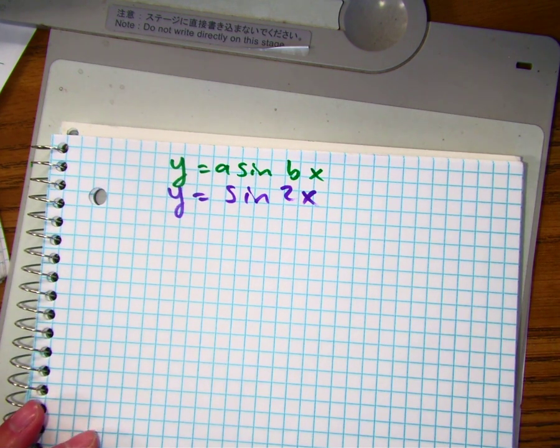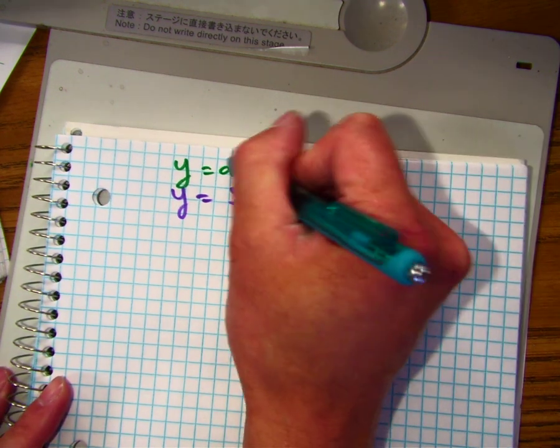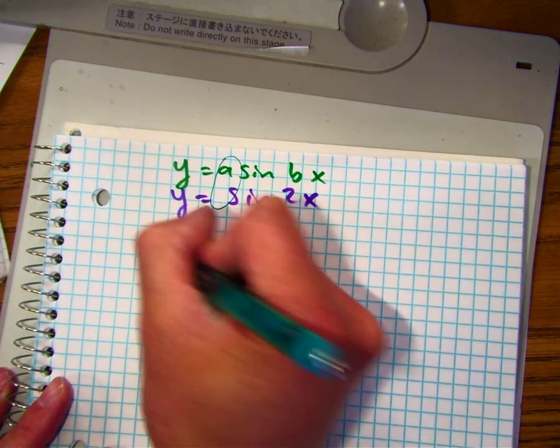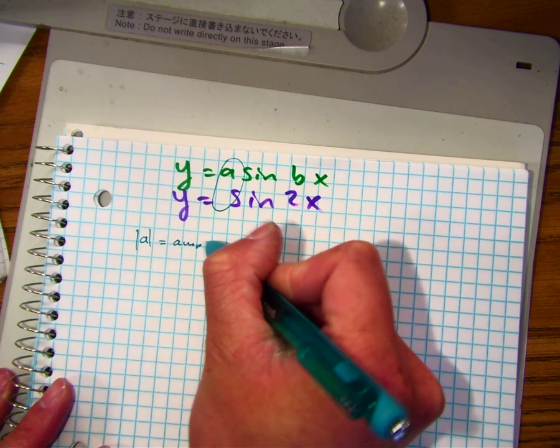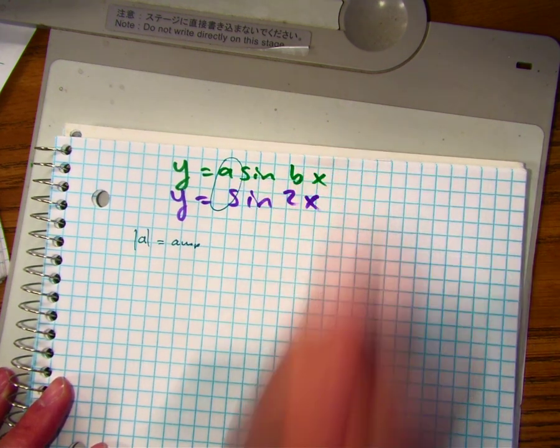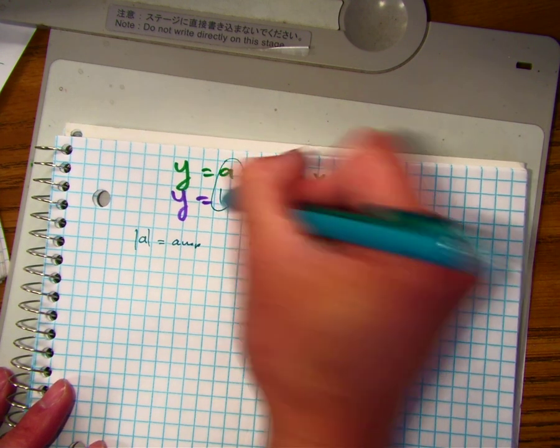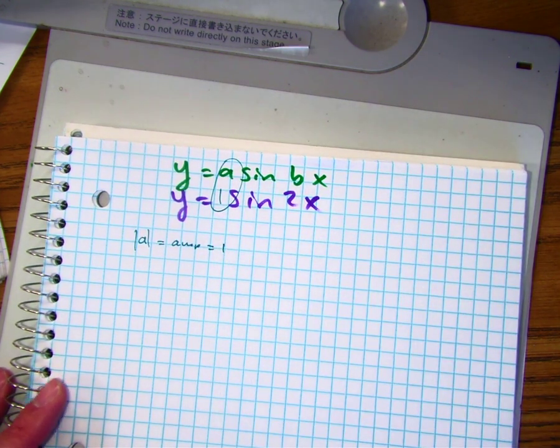So in this problem I'm asked to find the amplitude. The absolute value of A is my amplitude. Well, there is no number here. I can put a number which is what class? 1. The amplitude is 1.